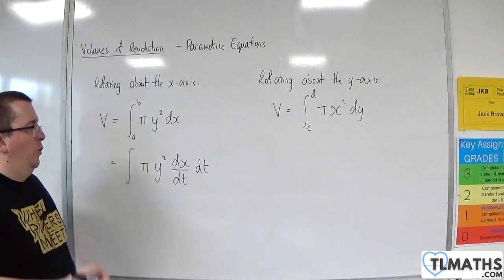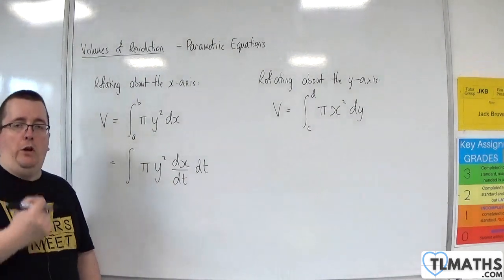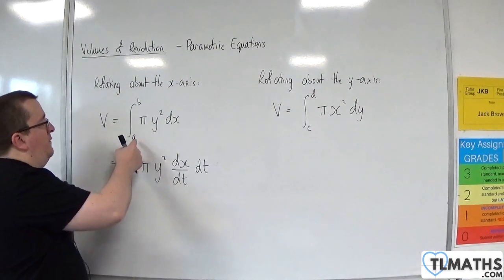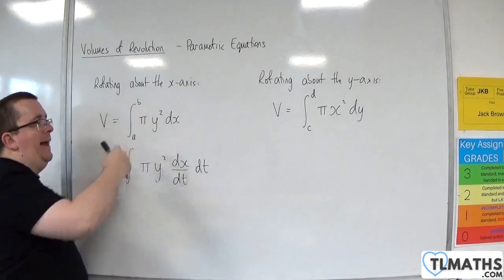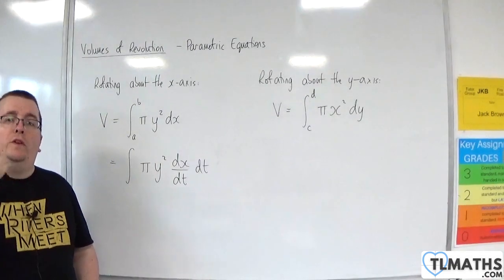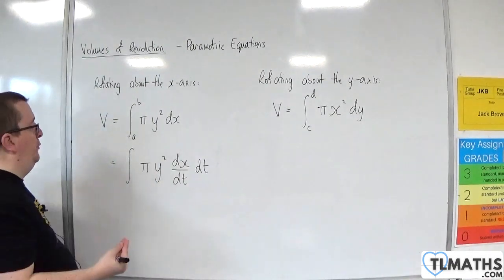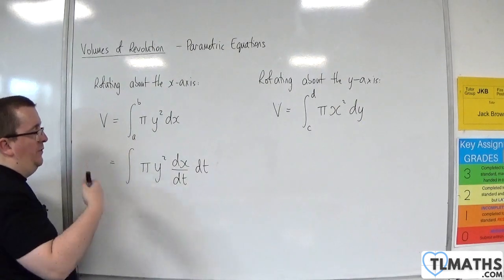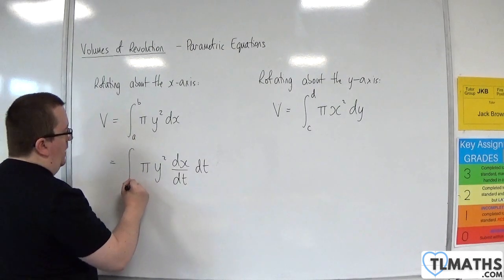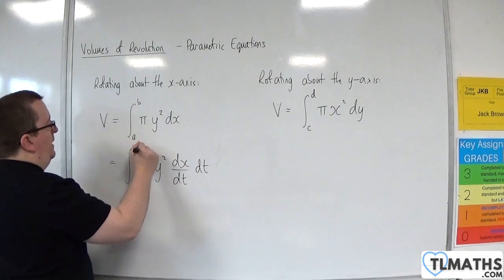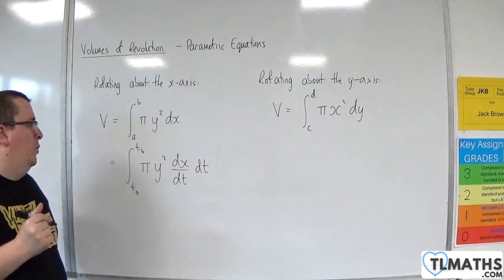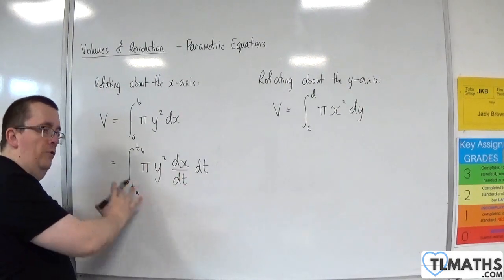Now, in order to do this, you also need to think about the corresponding t-value. Because if you're integrating between x equals A and x equals B, you want the corresponding t-value that goes with that. So the t-value for when x is A, let's put that as t little a, and this one will be t little b. So that will be your volume integral.